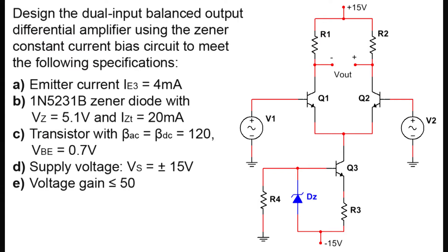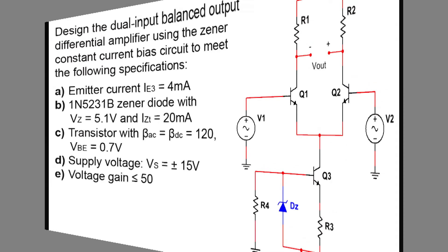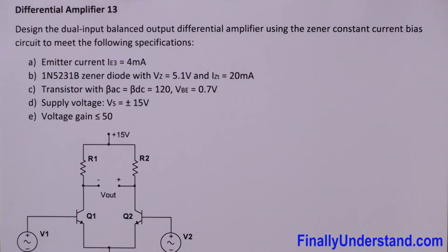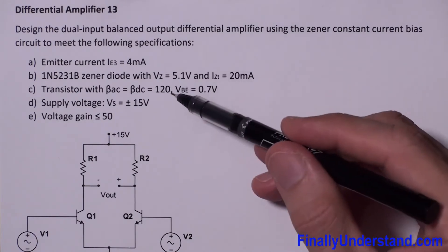Let's take a look at this example. This time we have a typical designing problem. We're supposed to design the dual input balanced output amplifier using the zener constant current bias circuit. So from where are we supposed to start? First, we have to look at what is given.